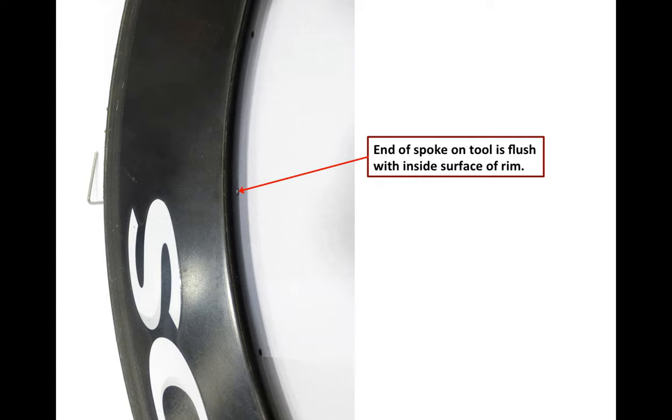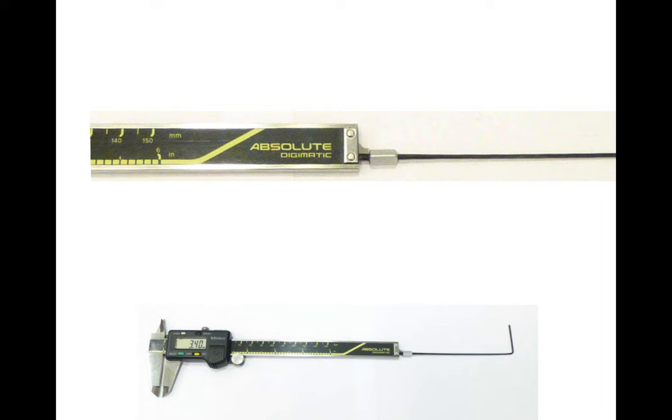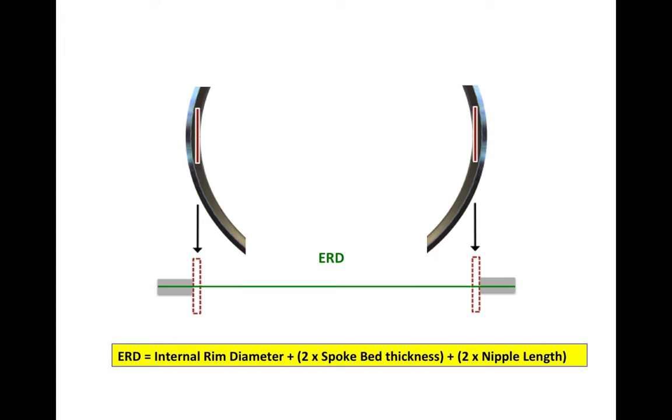And I've done that here with this piece of Reynolds rim. You can see the end of the spoke right there, and it's flush with the inside surface of the rim. So I just use my caliper and I measure the spoke bed thickness of, in this case, 3.4 millimeters. So there's my ERD.